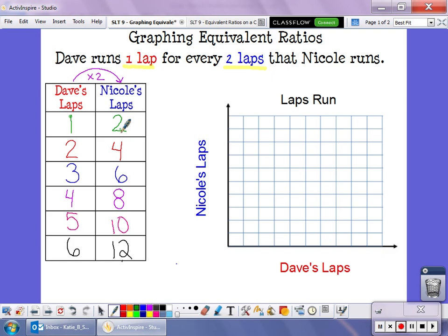Dave's laps, if we look at the bottom of our graph here, these are our x values. Nicole's laps are going to go up this side. So what I can do is I can use these two numbers to create an ordered pair. Dave ran one lap. Nicole ran two laps. And now I can put that information over here on my graph. In order to graph it, though, my graph needs some numbers.